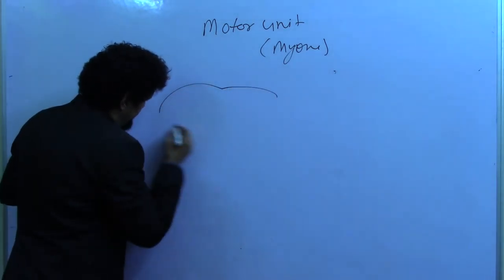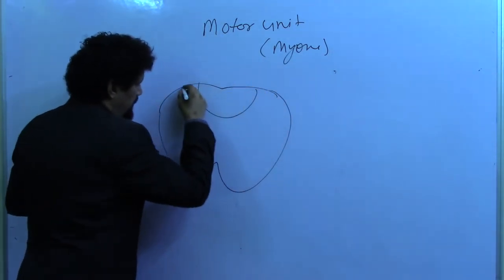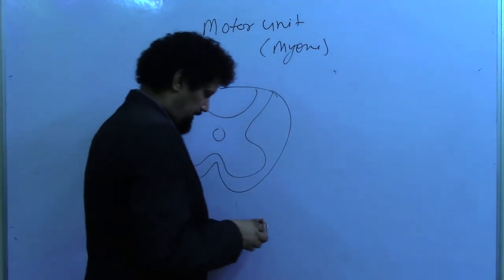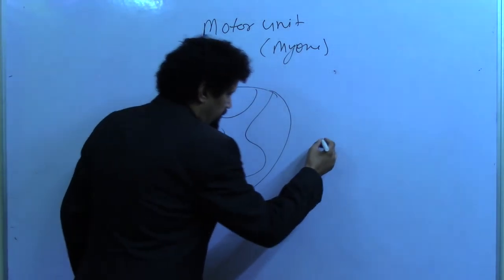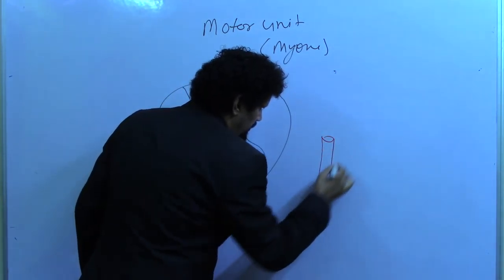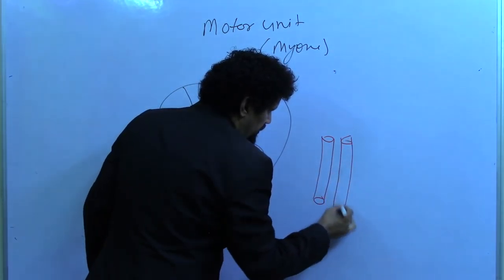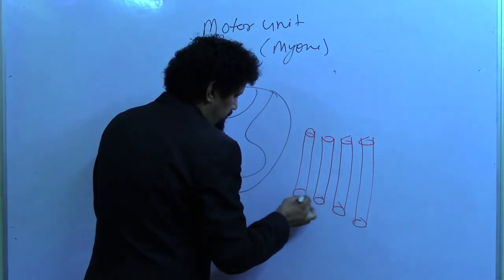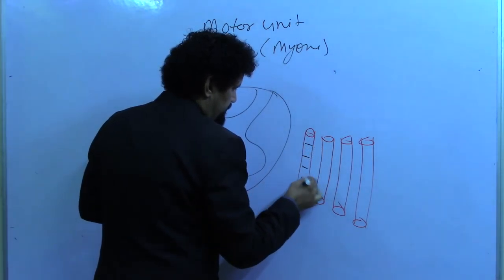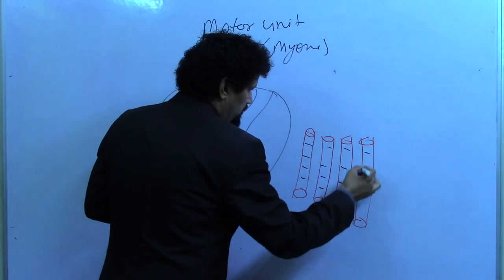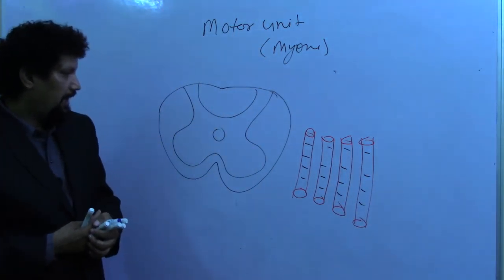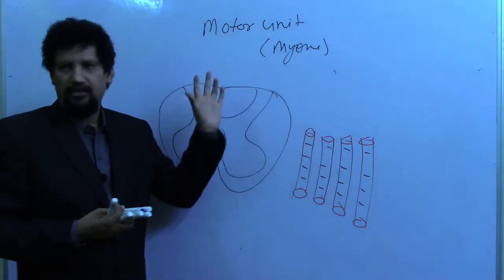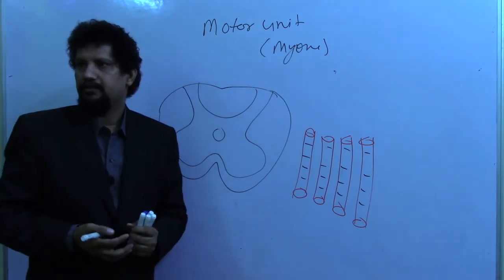In the transverse section of the spinal cord, we have the ventral horn and the dorsal horn. The cross-sections of the muscle fibers inside a muscle are parallel-arranged, as in the triceps. The alpha neurons are in the ventral horn — not the dorsal horn. The dorsal horn is the sensory horn where sensory fibers enter. The ventral horn contains alpha neurons, gamma neurons, and others.